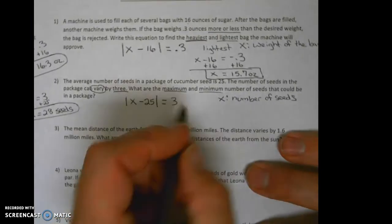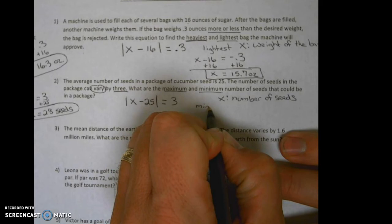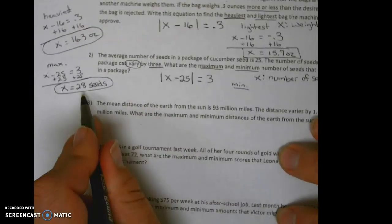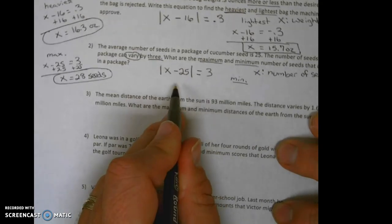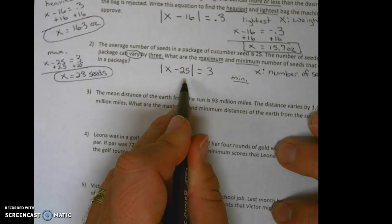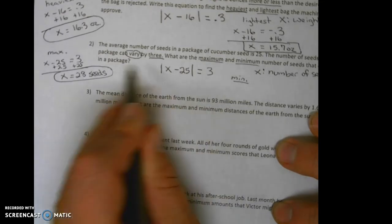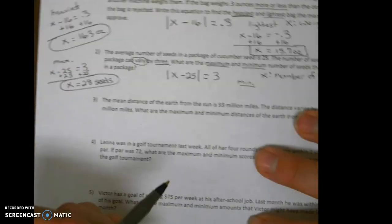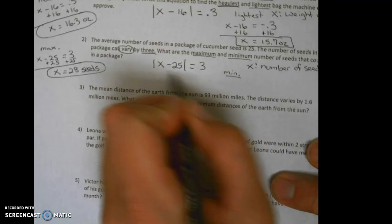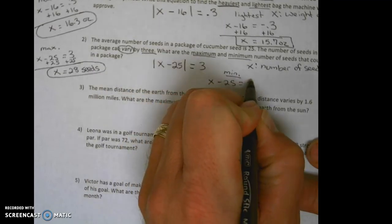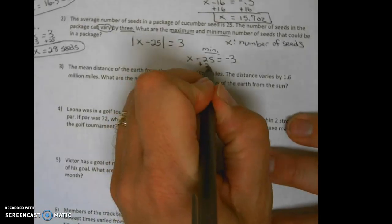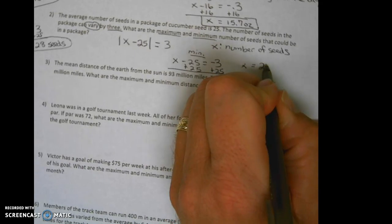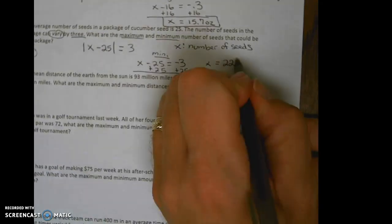What about our minimum number of seeds? Now for you smarties out there, I know that once you get this pattern down, you're going to be able to give me the answers without setting up the equation. I cody I want you to set up the equation, the absolute value equation, and I need to see both—maximum, minimum, heaviest, lightest, whatever it is—I want to see both equations. So minimum, it's going to be our other equation. Adding 25 on both sides, x equals 22. So the minimum number of seeds we could have is 22 seeds.